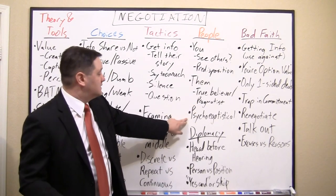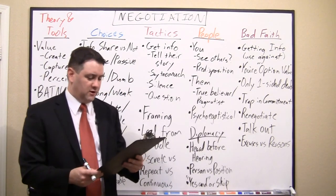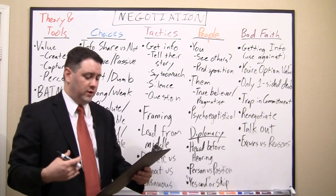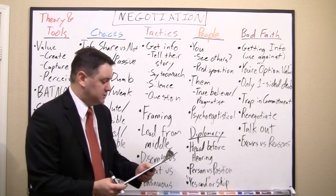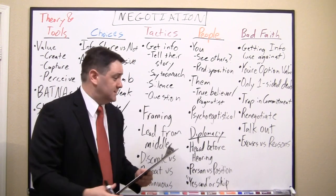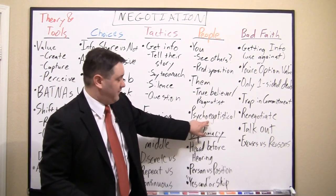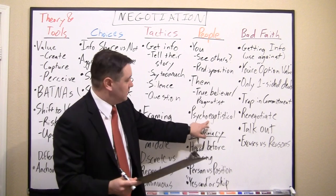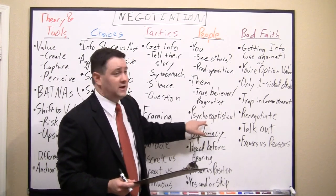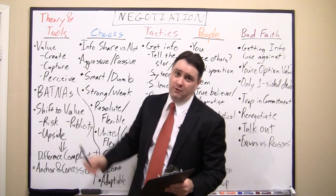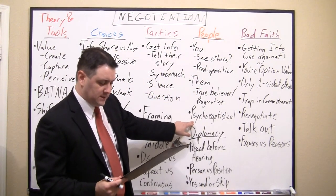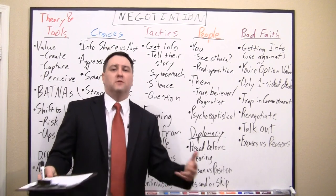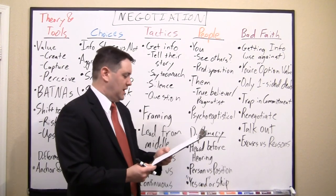The last element under people is the psycho-egotistical factors: our need for control, concern about reputation, ego, desire for relationships, wanting a position of power, and the need to be consistent. Crucially, these psycho-egotistical drivers often trump rational economic values. If you're dealing with a control freak, they might say no to a good deal simply because they felt it was rushed on them and they weren't in control.